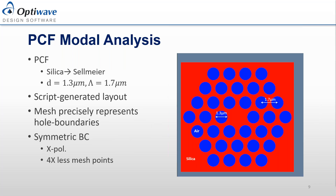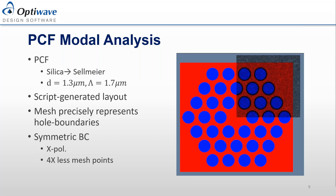The structure we're going to look at today is a photonic crystal fiber. This one is a solid core, but it's set up as a photonic crystal band structure. We have a triangular lattice of air holes in silica. The air hole diameter is 1.3 microns with a lattice spacing of 1.7 microns. In photonic crystal parlance, this gives an R over A constant of 0.38, which sets up the stop band. The structure has four-fold symmetry.